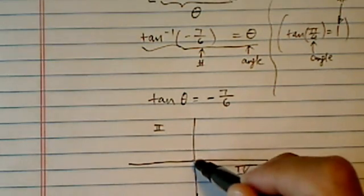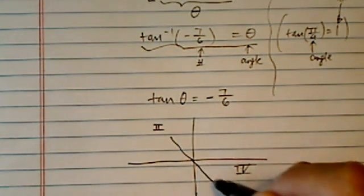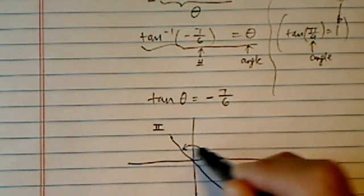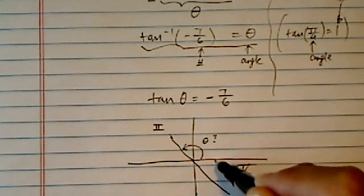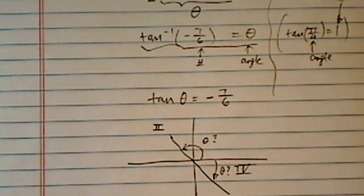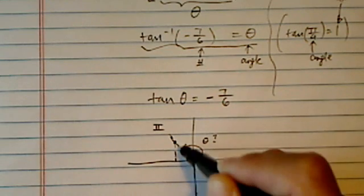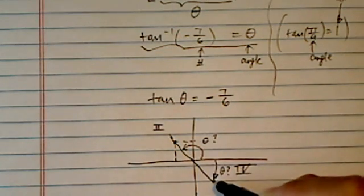Now here comes the difficult part for a lot of students, myself included, when I was learning the first time. Is theta this way or is theta this way? So how can you decide, because 7 over 6, it doesn't matter. It's just so long when it's negative, you should get the same thing, right?